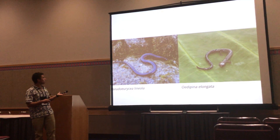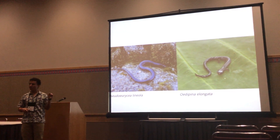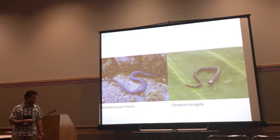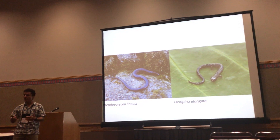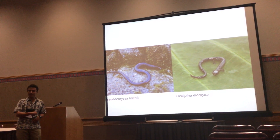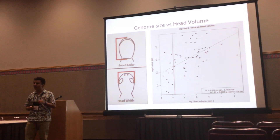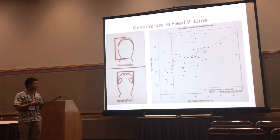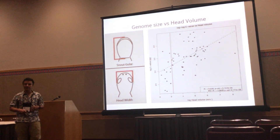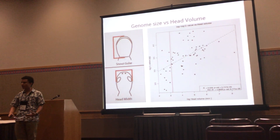Some salamanders like Oedipina elongata are very long but otherwise tiny, with tiny heads — they simply have an elongated body. So we thought that if selection is acting on head morphology, a better proxy for body size would be head volume. We measured snout-gular length, head width, and head depth. This correlation was also significant, positive, and very strong. The red line marks the miniature salamander threshold. Crucially, once we applied phylogenetic independent contrasts, this correlation persisted — suggesting head volume is a better proxy for body size.